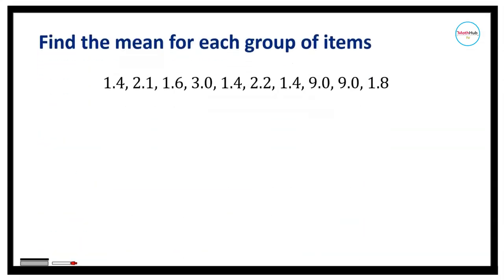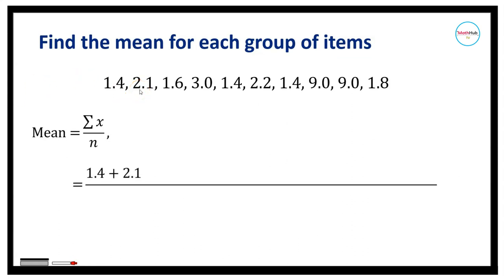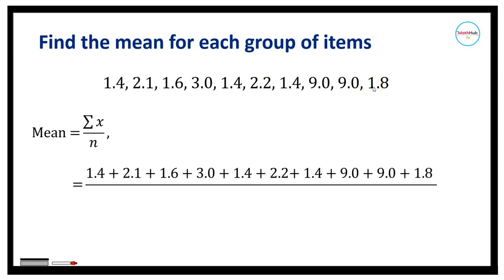Next, we will find the mean for this group of data. To find the mean, we will just add all the data entries: 1.4 plus 2.1 plus 1.6 plus 3.0 plus 1.4 plus 2.2 plus 1.4 plus 9.0 plus 9.0 plus 1.8, and divide it by 10, which is the number of data entries. Summing up the numerator gives 32.9 divided by 10, which is equal to 3.29.